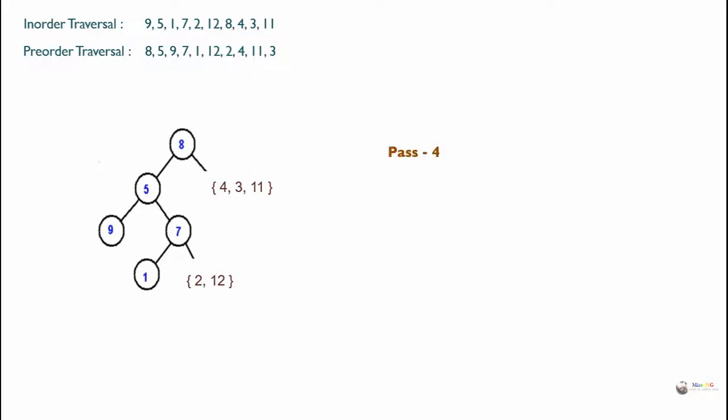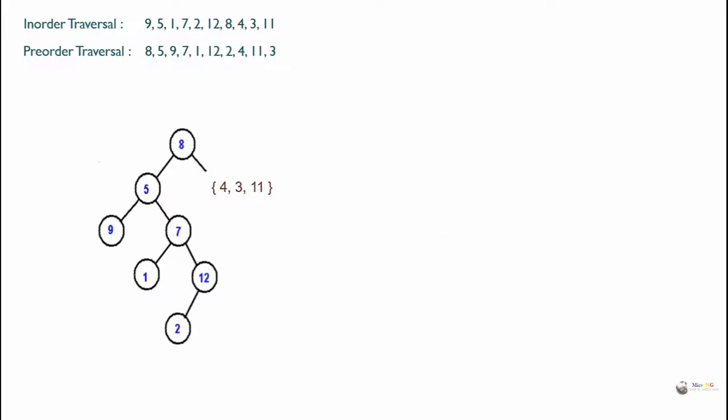Now out of 2 and 12 in pre-order traversal, the element coming first from the beginning is 12. So the root will become 12. In in-order traversal, 2 is coming on the left of 12, so the left subtree is 2. We can rewrite this subtree with 12 as the root and 2 as the left node.